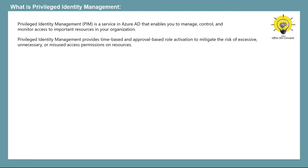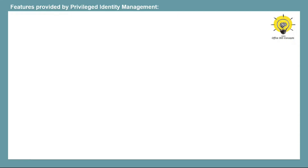With time-based role activation, you can decide for how long a particular administrator should have the permission. And with approval-based role activation, you can choose a delegated approver who is going to approve the request for role assignments. Privileged Identity Management provides multiple features to help you manage administrator roles and permissions. The first feature is just-in-time access — a model in which users receive temporary permissions to perform privileged tasks, and once permissions are revoked, they lose access to the resources.